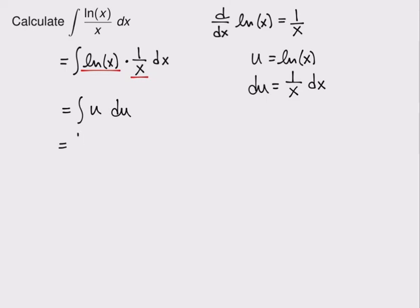So I know how to integrate this, it's 1 half u squared plus an arbitrary constant and since I started with x's I'm going to end with x's so I'm going to replace the u with natural log of x and to write that square I'm going to be very careful and there we go that's the antiderivative.